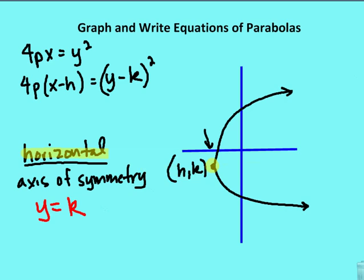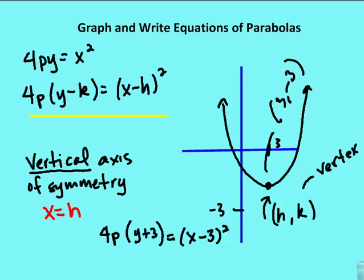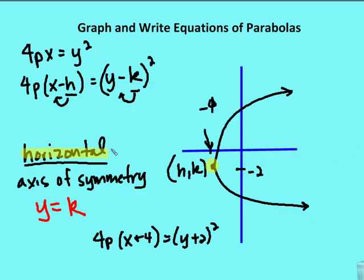For a vertex at (negative 4, negative 2), irrespective of the p value, the equation is: 4p times (x plus 4) is equal to (y plus 2) squared. Notice the h value is always associated with x and the k value always associated with y, regardless of whether the parabola opens right, left, up, or down.